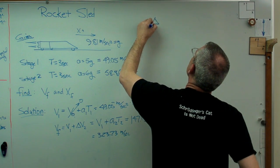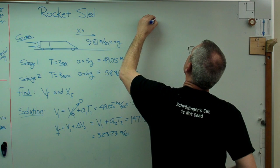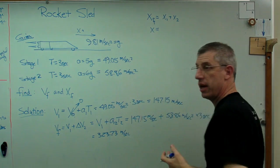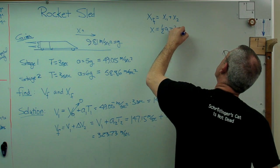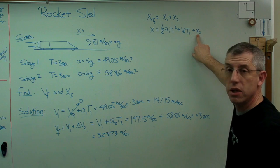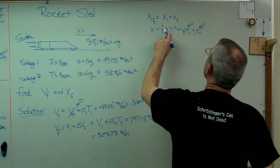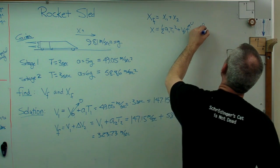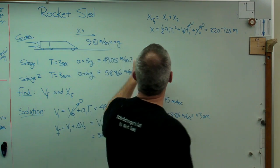Okay. So we've got that. Let's go up here and say that X final equals X1 plus X2. Well, X1 is going to be 1 half A1 T1 squared plus V0 T1 plus X0. Well, we already know we're coming from a standing start and the initial position is zero. So that goes to zero and that goes to zero. If we put the number in there for acceleration one, which is 49.05, we're going to get 220.725 meters. A couple of football fields basically.